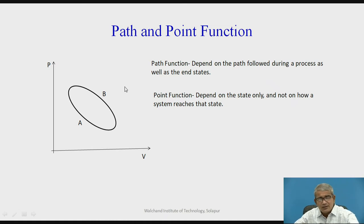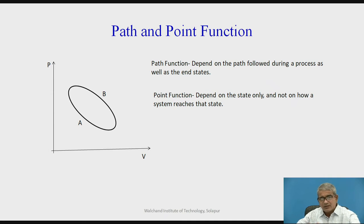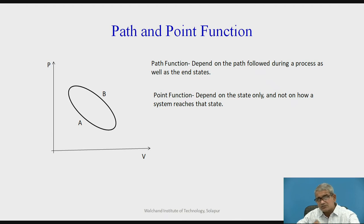Some functions depend on which path will be followed. Suppose a simple example: you are moving from one destination to another destination through one path. Whatever time is required moving from one destination to the second — the two destinations are fixed — you are moving from your house to the school. One regular path takes some 20 minutes. But sometimes you can follow a different path, moving from your house to the school by a different path, and the time calculation is different. So some are related to path functions and some are related to point functions.